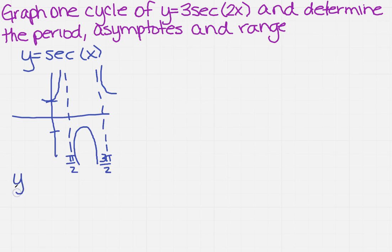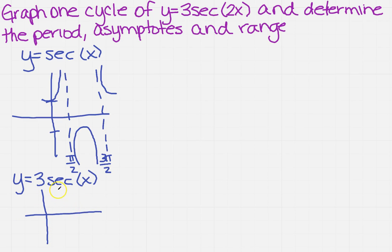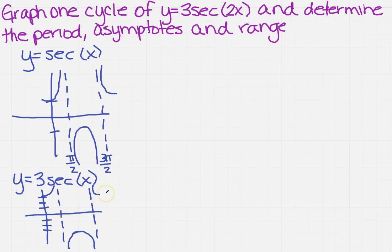Now if we modify it slightly and just leave the amplitude in front, we get 3 secant of x. The only difference from the base graph is that the vertical asymptotes remain the same, but now the graph has to cross at 3 and at negative 3, so the arches are stretched vertically to those values.